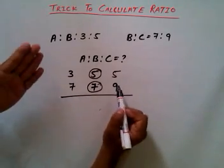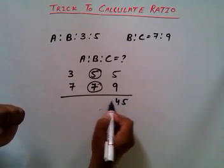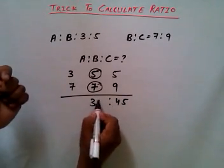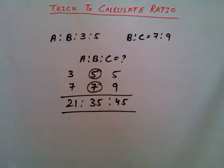Now we can directly multiply the terms which are in vertical line: 5 into 9 is 45, 5 into 7 is 35, 7 into 3 is 21. This is the final ratio, and it is the easiest method to calculate.